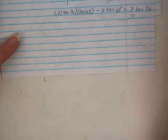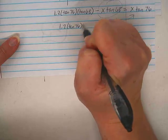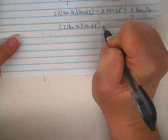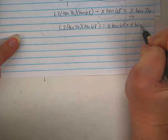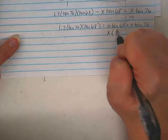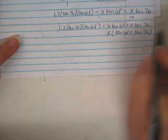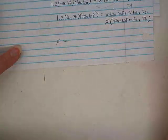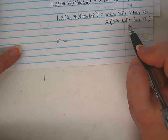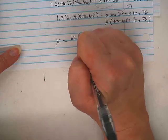Now I want the X's on the same side of the problem, so I'm going to move that over there. Good thing I'm recording this. So then I would have 1.2 times the tangent of 76 times the tangent of 68 equals X tangent 68 plus X tangent 76, which gives us X times the tangent of 68 plus the tangent of 76, because I can factor that X out of there, yes? Which means I now have sort of an answer I can plug into a calculator.